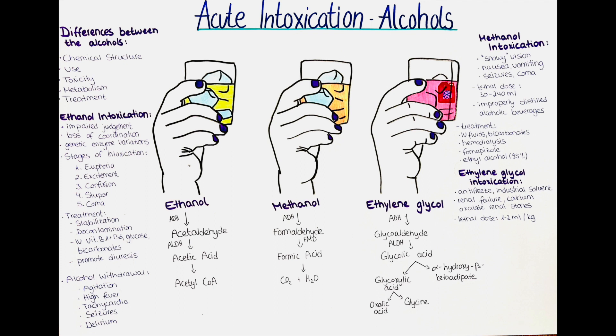The second difference is the use. Ethanol is the most commonly consumed alcohol, found in beer, wine and spirits. It is also used as a solvent and fuel. Methanol is used as an industrial solvent, antifreeze and fuel. Ethylene glycol is used primarily as an antifreeze in car engines and as a solvent.